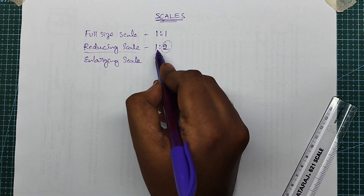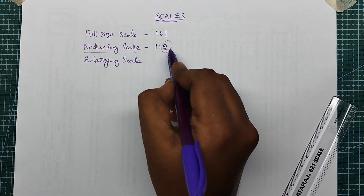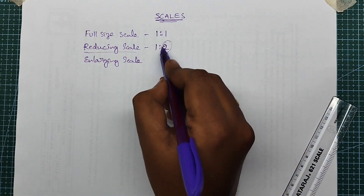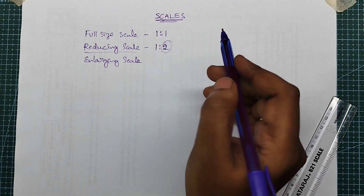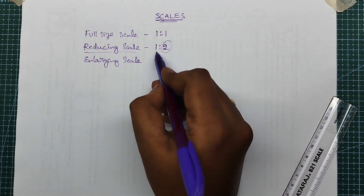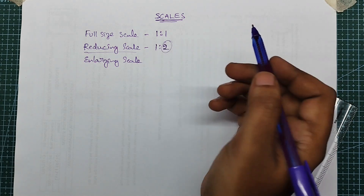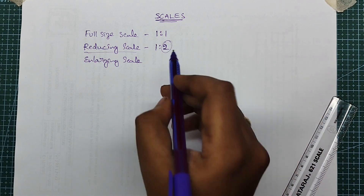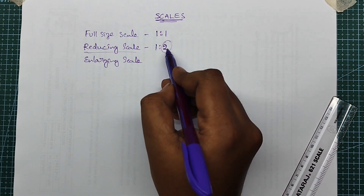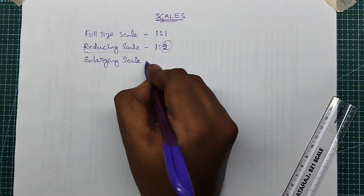In reducing scale, the ratio is on the right side — for example 1 is to 2, or 1 to 3, or 1 to 4, or 1 to 5. Now we are going to look at enlarging scale.